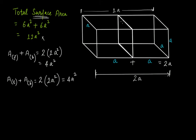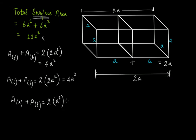The right side face and left side face each have area a × a = a². Both are the same, so their combined area is 2a². Adding all three: 4a² + 4a² + 2a² = 10a². The total surface area of the two joined cubes is 10a².